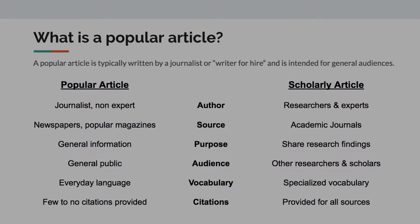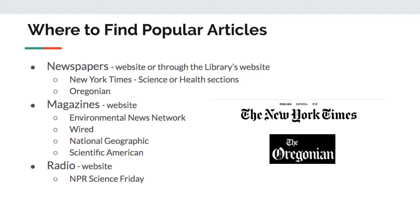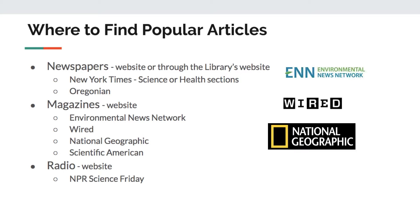You can find popular articles in many places on the web and in print. Specifically, you can find them in newspapers, such as the New York Times and our local newspaper, the Oregonian. Typically, there's a science or a health section, so try to find those sections first. You can also use a web magazine, such as Environmental News Network, Wired, National Geographic, and Scientific American. Just use Google to locate those webpages and either browse through their issues, or you can even do a search within that webpage.